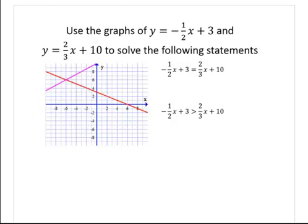Negative one-half x plus 3 is the red line, and two-thirds x plus 10 is the purple line. We ask ourselves where do they meet — they meet right here. There's the boundary when x equals negative 6. So the solution of the equation is x equals negative 6.